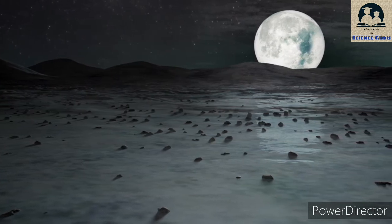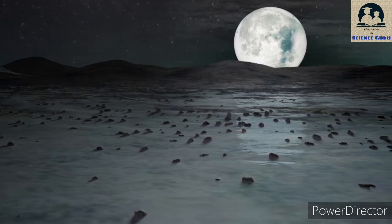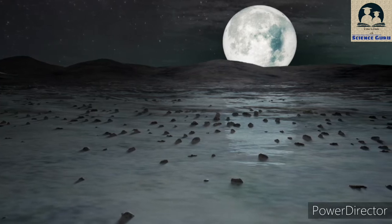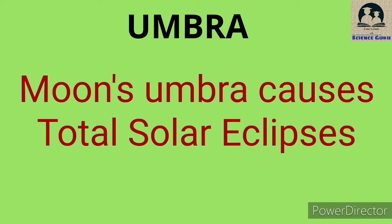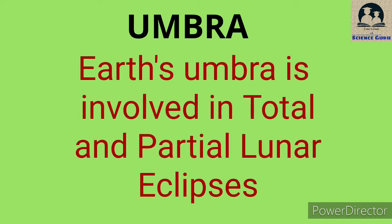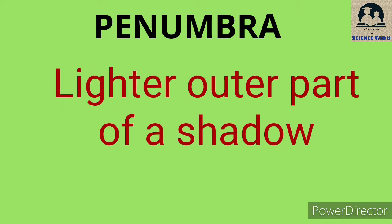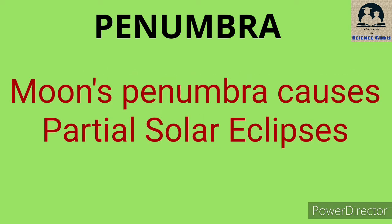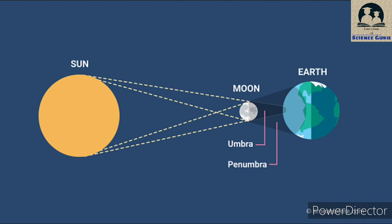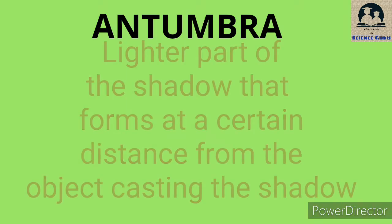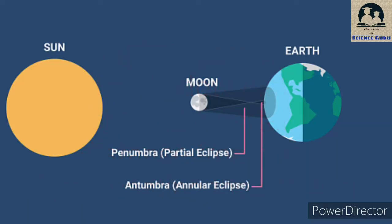Before moving to the different types of solar eclipse, we have to learn three important terms. First one is Umbra. Umbra is the dark center portion of a shadow. The moon's Umbra causes total solar eclipses and the earth's Umbra is involved in total and partial lunar eclipses. Second one is Penumbra. Penumbra is the lighter outer part of a shadow. The moon's Penumbra causes partial solar eclipses and the earth's Penumbra is involved in penumbral lunar eclipses. Third one is Antumbra. It is the lighter part of a shadow that forms at a certain distance from the object casting the shadow, and it is involved in annular solar eclipses.